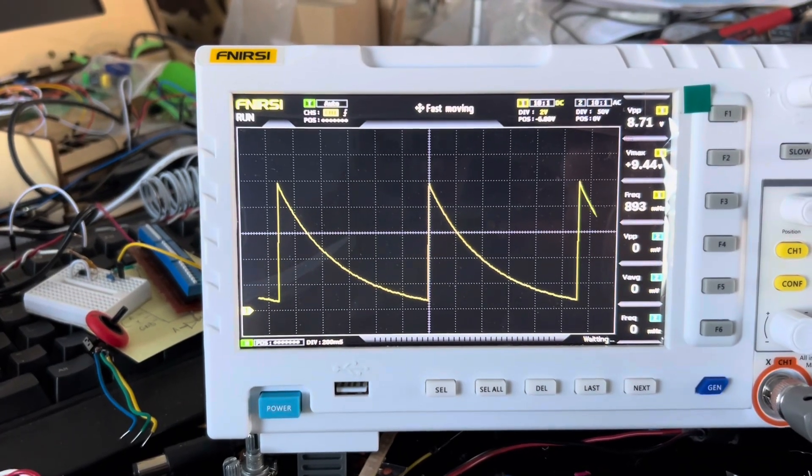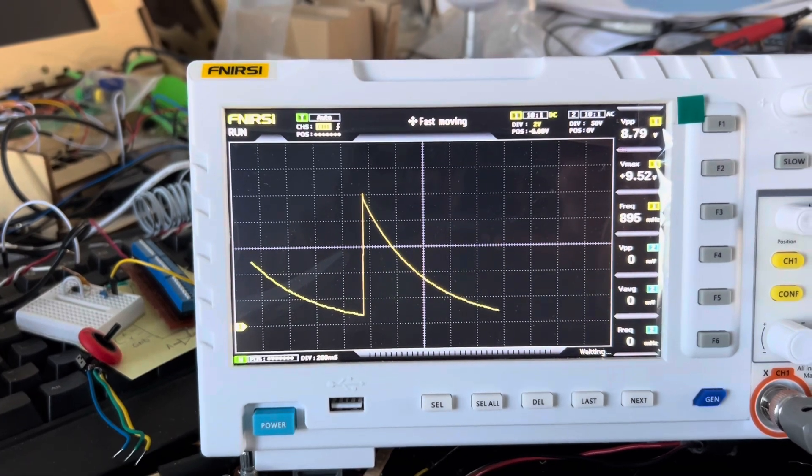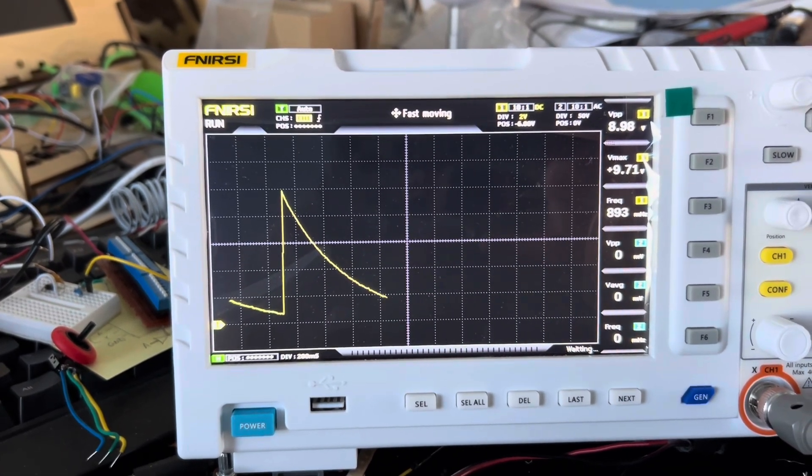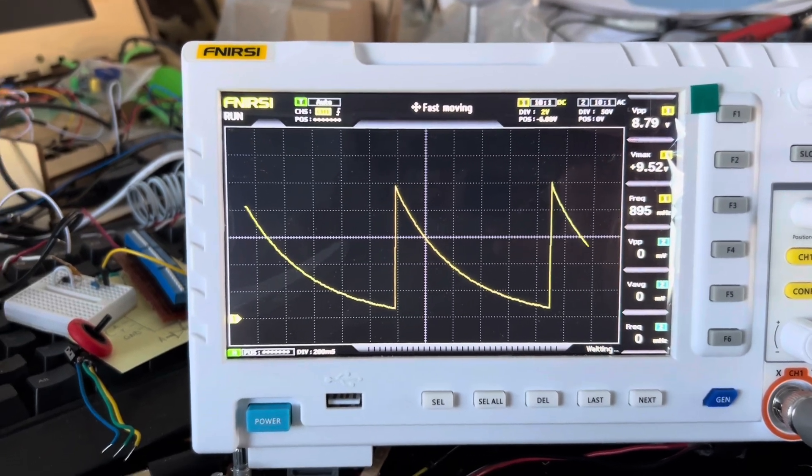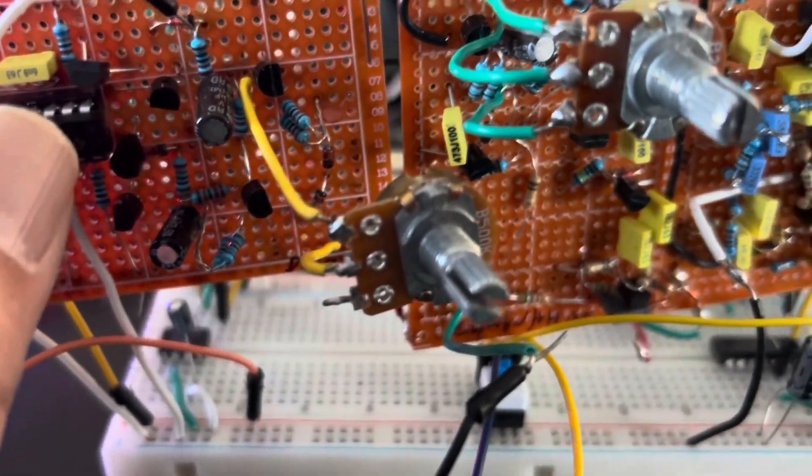And here's the long hi-hat envelope for comparison. The open hi-hat with the adjustable decay via this potentiometer right here.